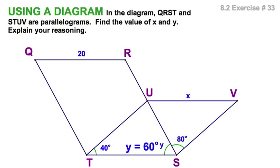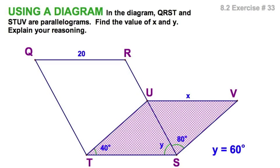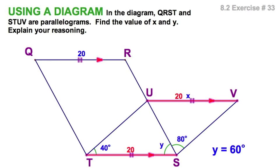Let's look at the second part of this. How about finding this side? We've got two parallelograms here and here. So imagine QR is congruent to TS, but then TS is also congruent to UV, just like the old transitive property. So this segment, UV, must also be equal to 20. So X is 20.